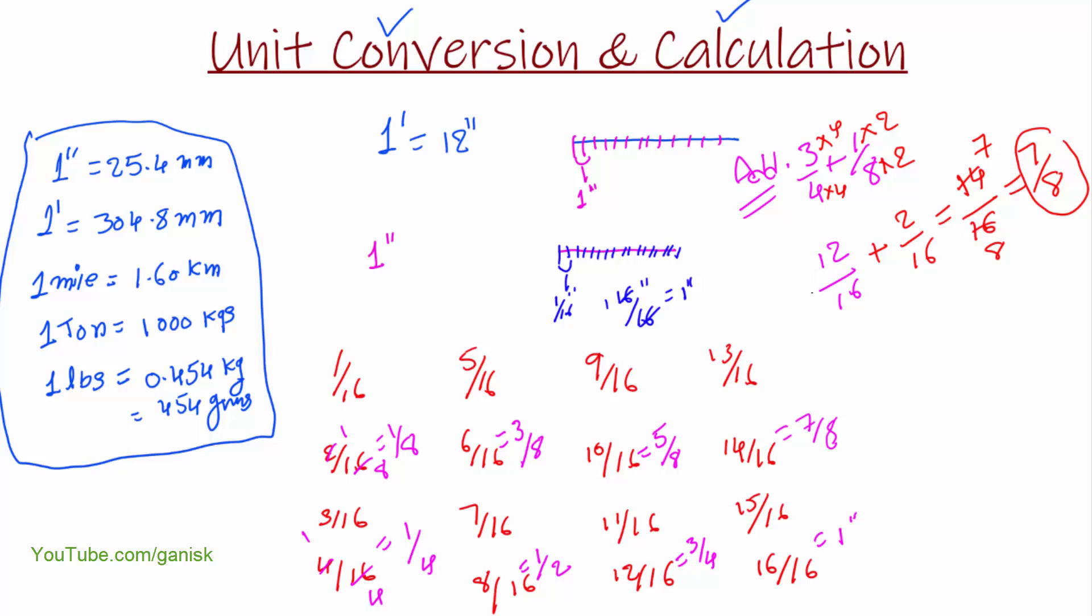And similarly you can subtract the same, just like this. For example, 3 by 4 minus 1 by 8. We have this calculation. So 3 by 4, to become 16 we need to multiply with 4, top and bottom. So similarly here, multiply with 2, becomes 16 value at the bottom.